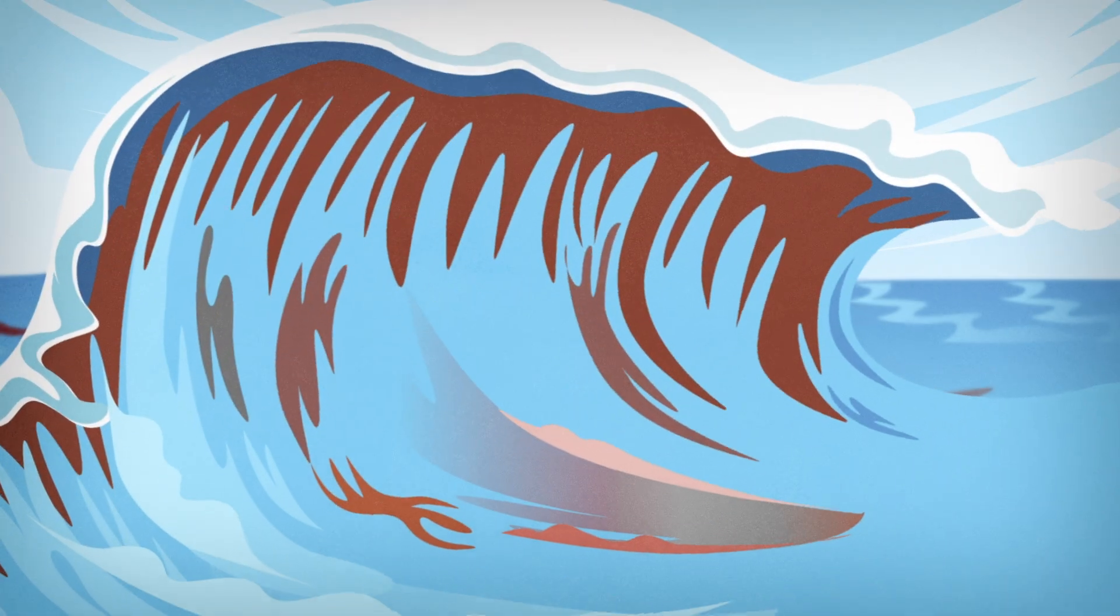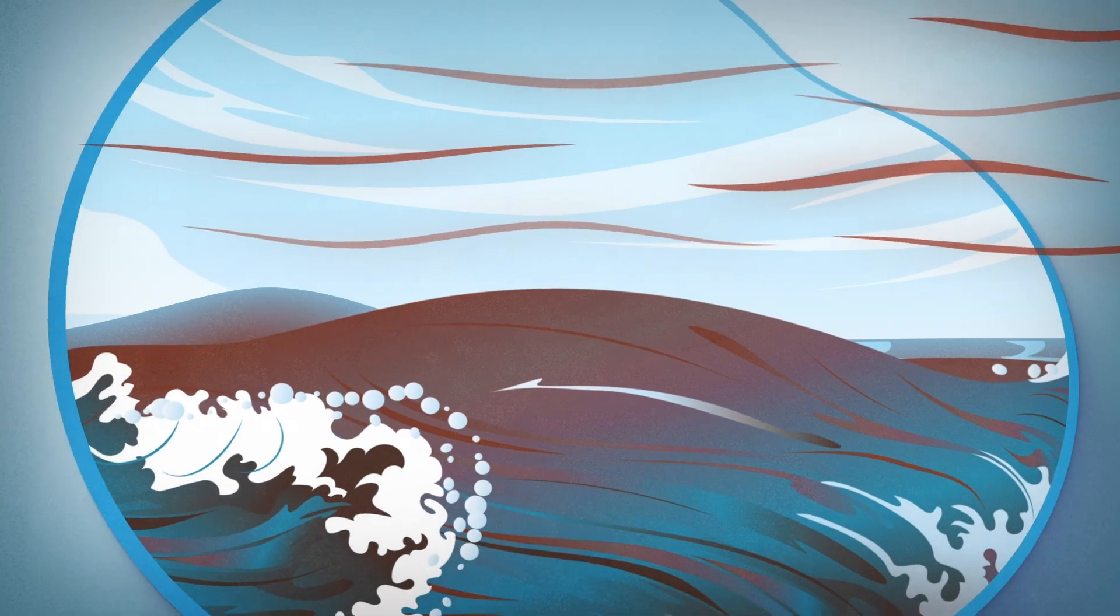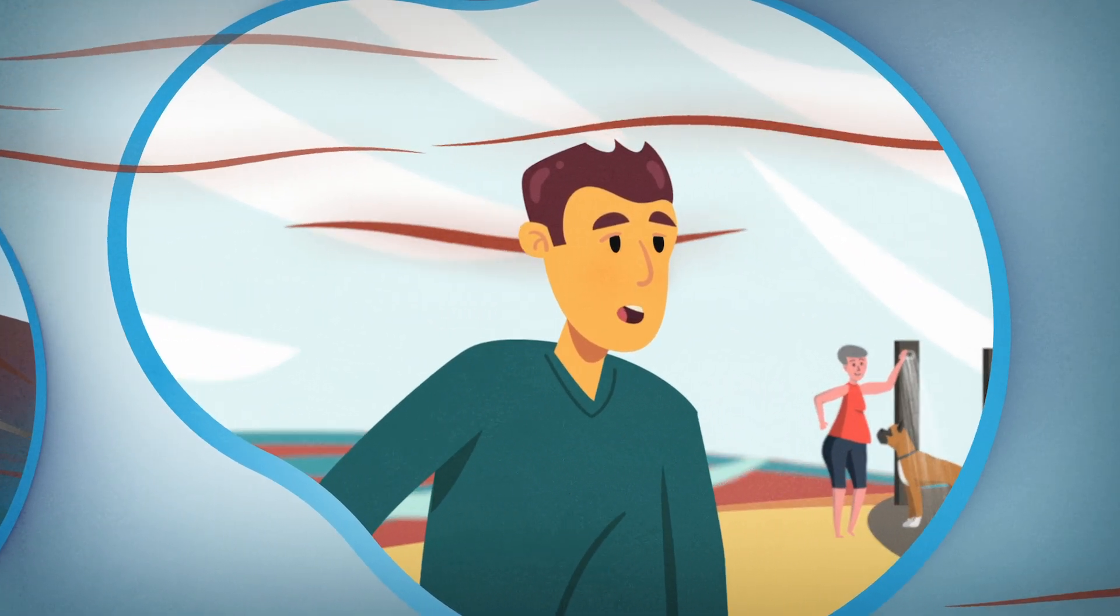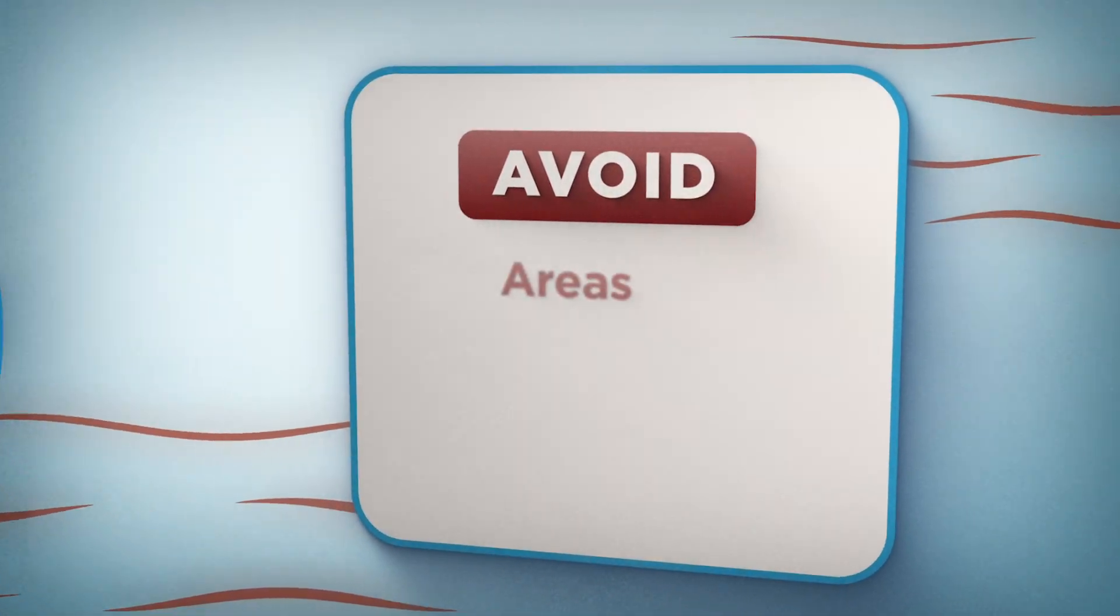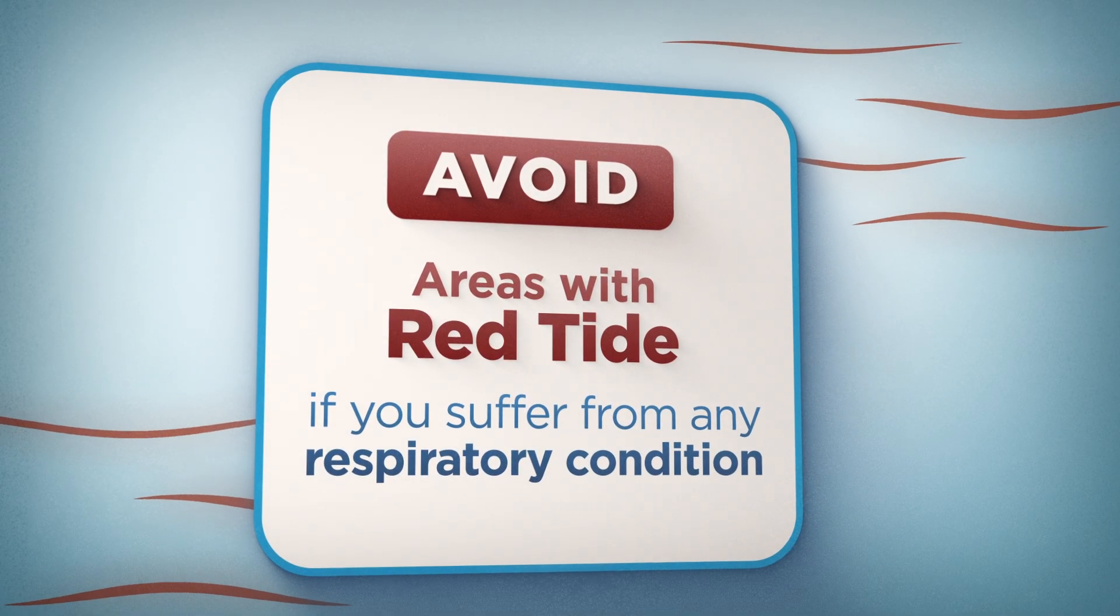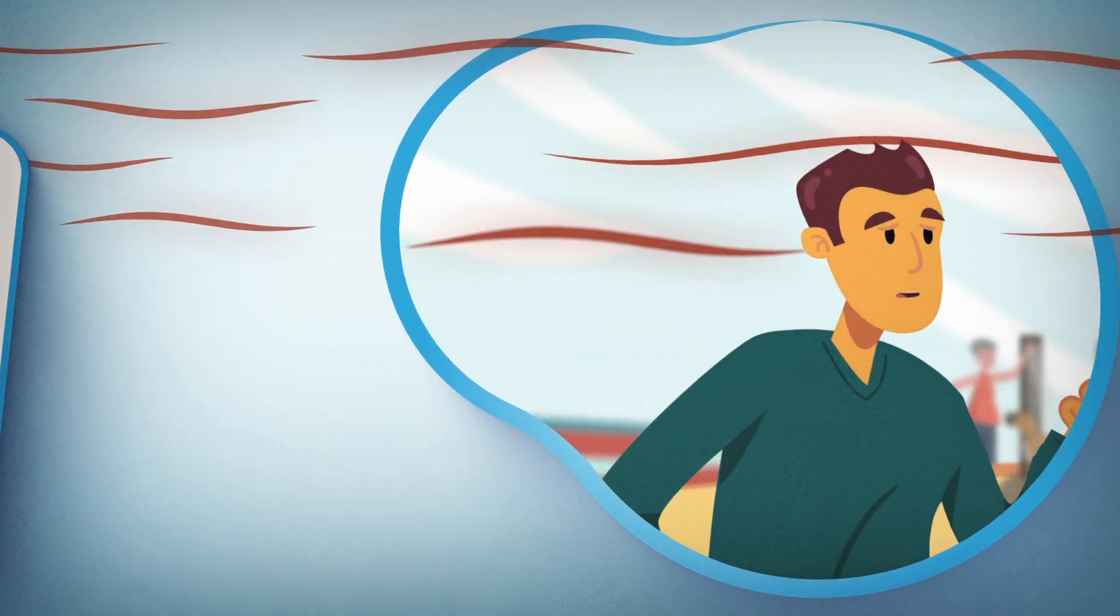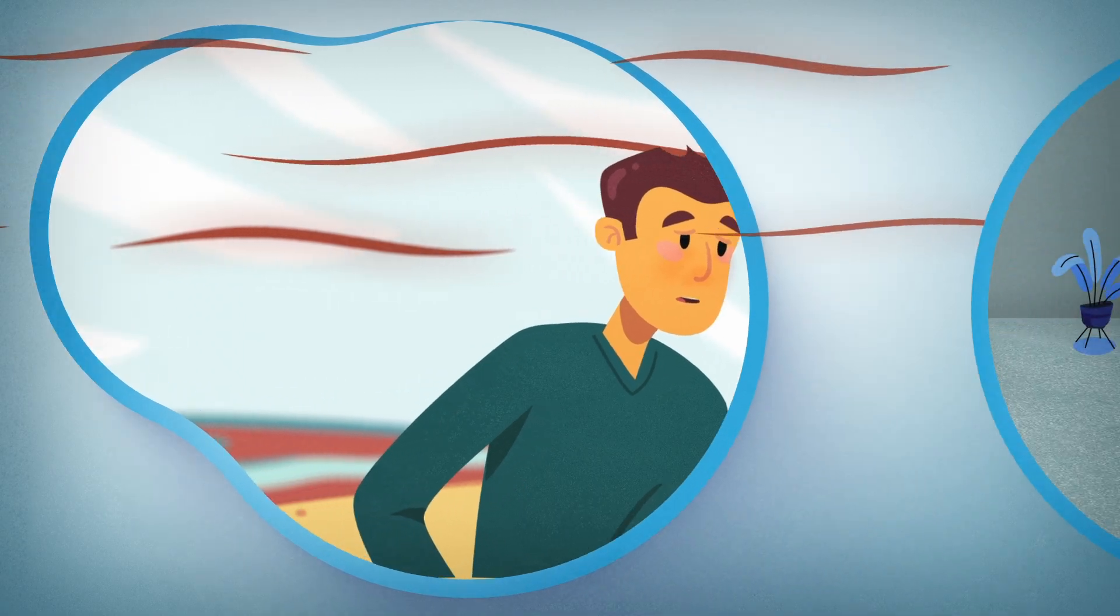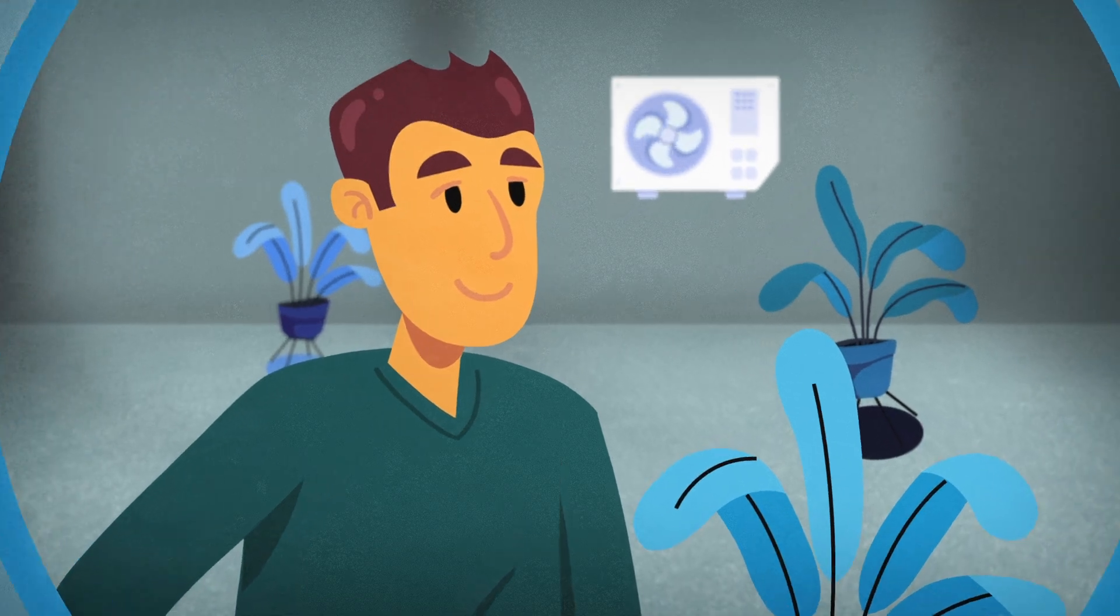During a bloom, wave action can break open Karenia brevis cells and release brevitoxins into the air. Winds that blow toxins onshore can lead to respiratory irritation in people and pets, although red tide affects everyone differently. It's especially important for people with severe or chronic respiratory conditions such as emphysema or asthma to avoid being close to areas with red tide as it can cause serious illness. If you start to cough or experience itchy or watery eyes, moving away from the beach and into an air-conditioned area can often help provide relief.